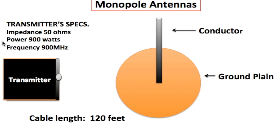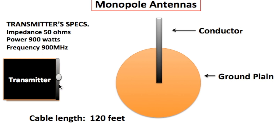This is important in order to have maximum power transferred to the antenna. For all 900 watts to be transferred from the transmitter to the antenna and radiated out into the air for receivers to pick up, the transmitter output, the coaxial cable, and the antenna all have to have the same impedance of 50 ohms. If this is not the case, we're going to have something called impedance mismatch, and all the power would not be radiated out to the air. Any power that's not radiated out would be reflected back into the cable, which could damage the cable and the transmitter.